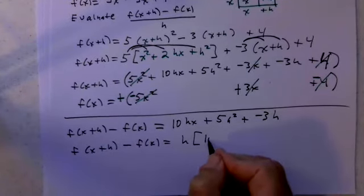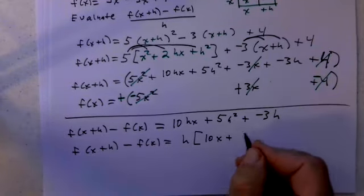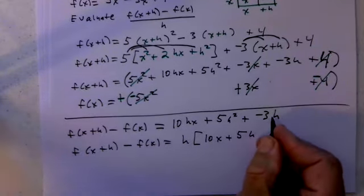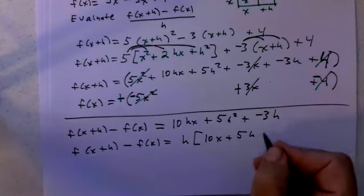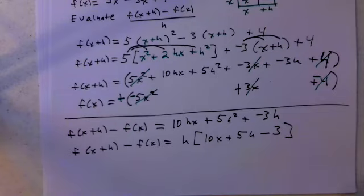10hx divided by h is 10x. 5h² divided by h is 5h, plus negative 3h divided by h is plus negative 3, or minus 3. That's good.